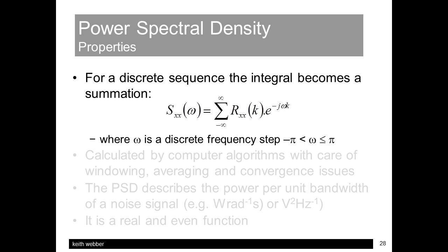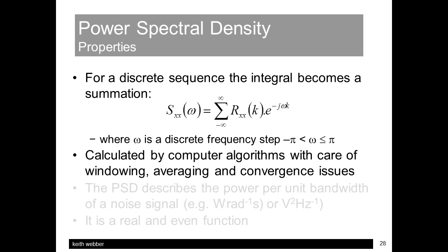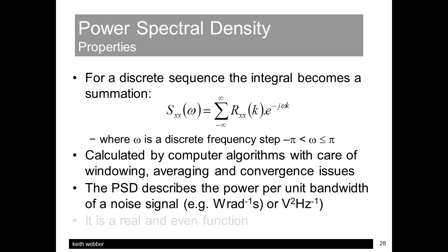For a discrete sample sequence, the power spectral density, or PSD, becomes a summation. It's best found using computer algorithms, but care must be taken for the usual FFT issues of windowing and so on, along with a consideration for the noisiness of the signals by applying some form of averaging. The PSD describes the power per unit bandwidth of the noise signal, generally in units like watts per radian per second, or perhaps volts squared per hertz for a voltage signal.